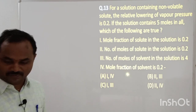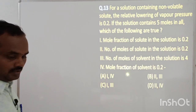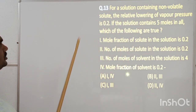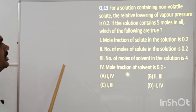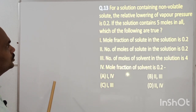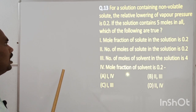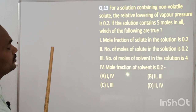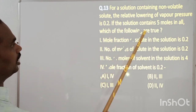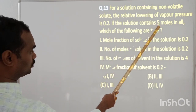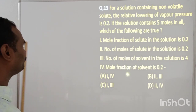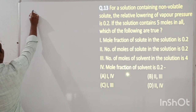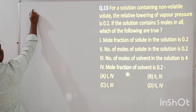In the 13th problem: For a solution containing a non-volatile solute, the relative lowering of vapor pressure is 0.2. If the solution contains 5 moles in all, which of the following is true? This means the total moles of solute plus solvent equals 5 moles. This is a colligative property problem based on relative lowering of vapor pressure.